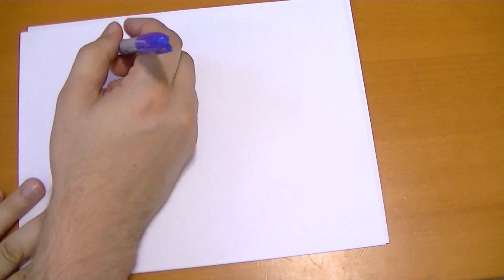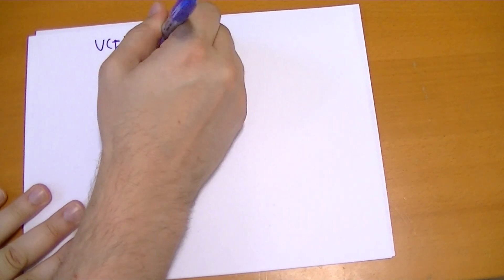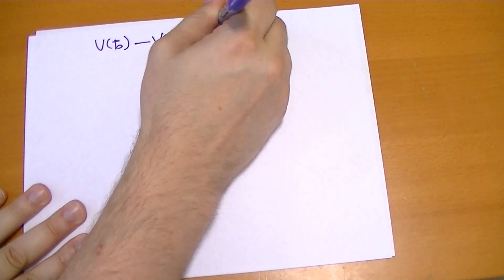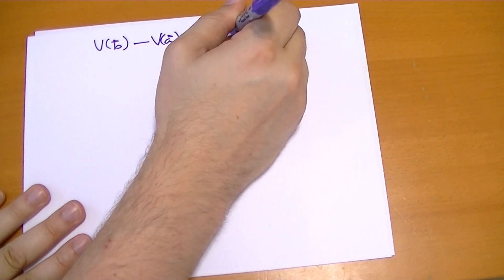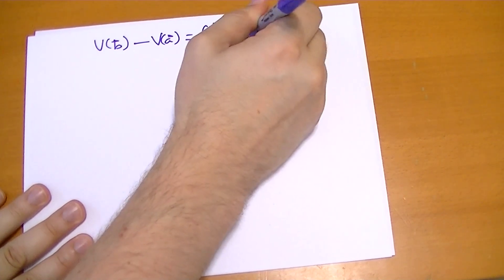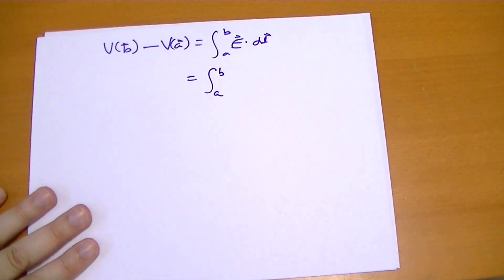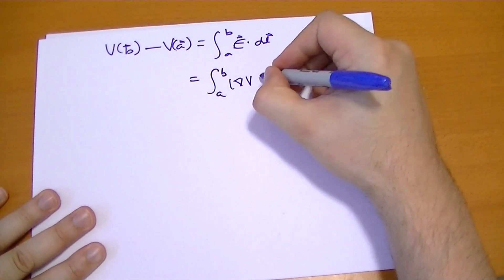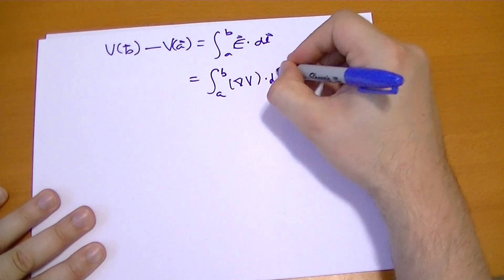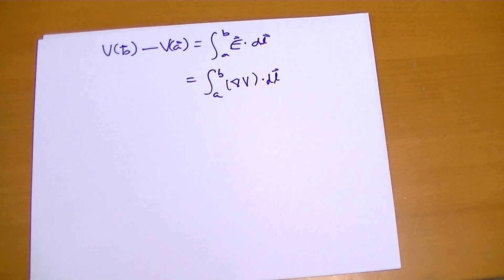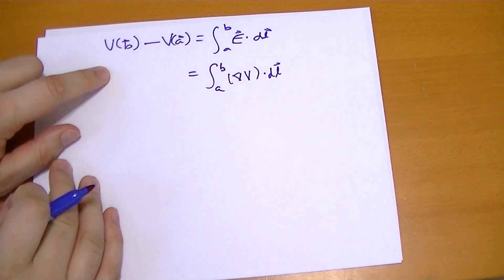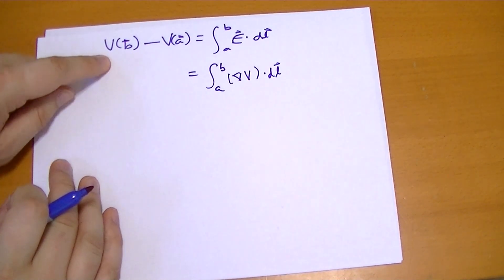So the rule is, we have V(B⃗) - V(A⃗) is equal to the integral from A to B of the electric field·dL⃗, right? Well, this can also be the integral from A to B of the gradient of this vector potential·dL⃗. And on the left side, this is basically the integral of that field from A to B.